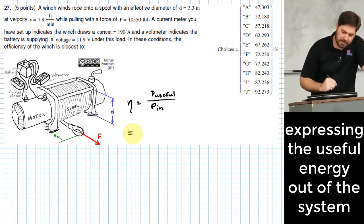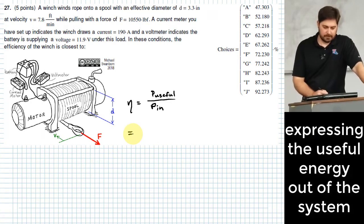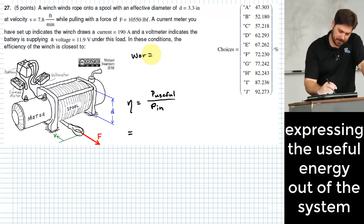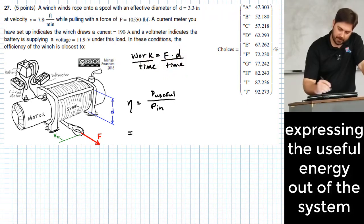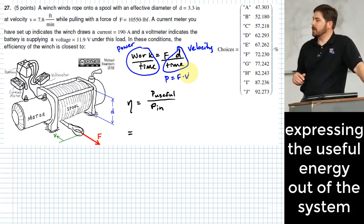So what is our useful energy out? Force times velocity, right? Just like we saw before, work is equal to force times distance. If you take work divided by time, force times distance divided by time, what you have on the left is power. And what you have with D and time over here is velocity. So you end up saying that P is equal to F times velocity, force times velocity.